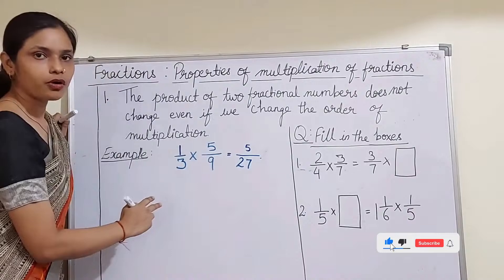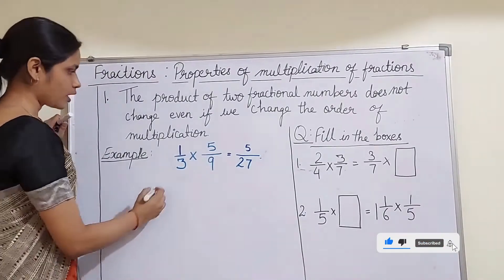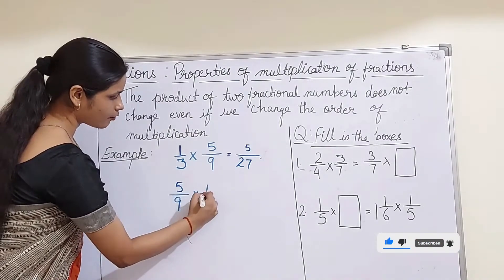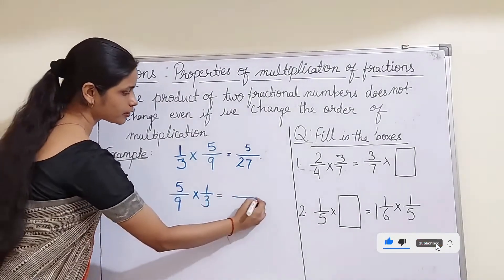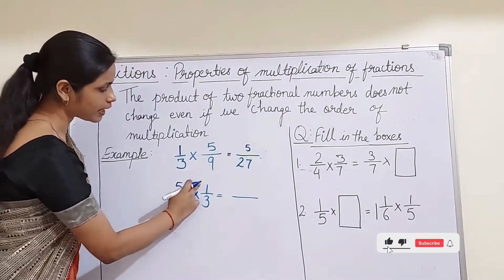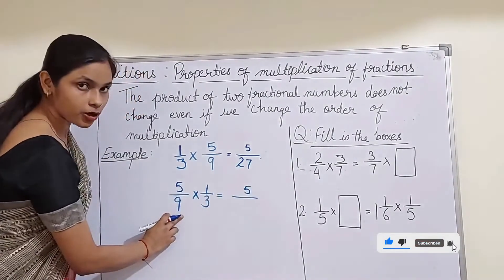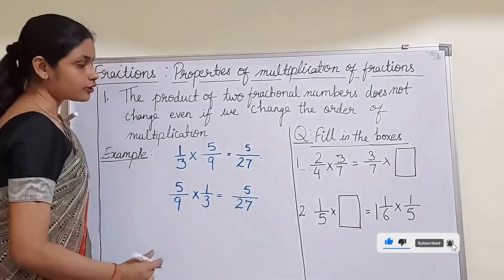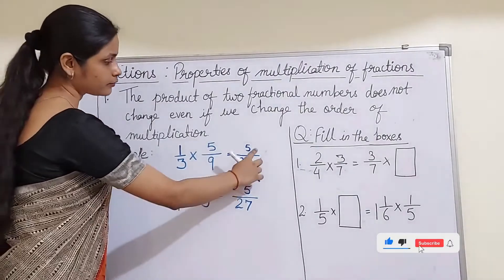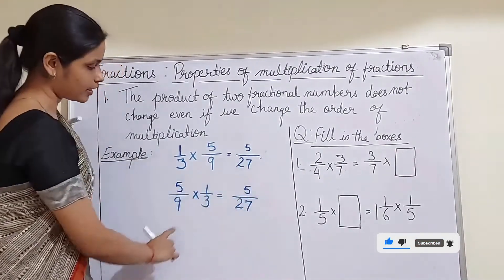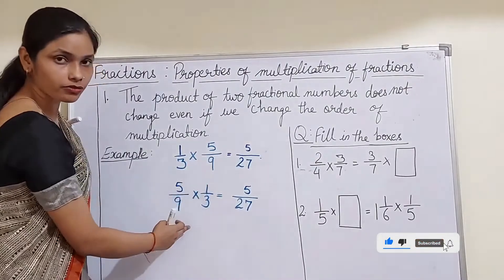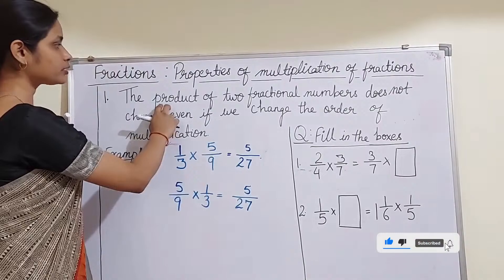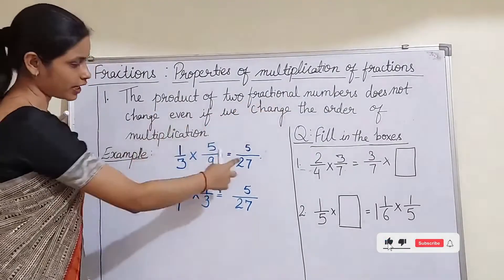Now let us change the order of the fraction numbers. If we take 5/9 and then multiply by 1/3, in the numerator we have 5 multiplied by 1, which gives 5. In the denominator we have 9 multiplied by 3, which is 27. So when we changed the order of multiplication, the product is the same: 5/27. This confirms that the product of two fractional numbers does not change.